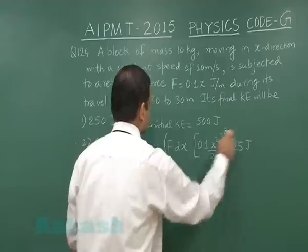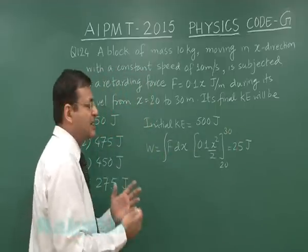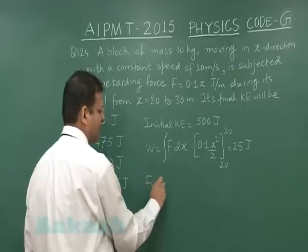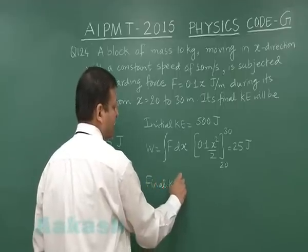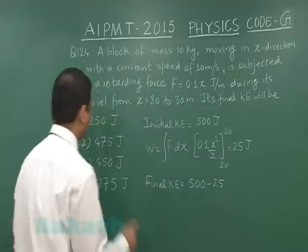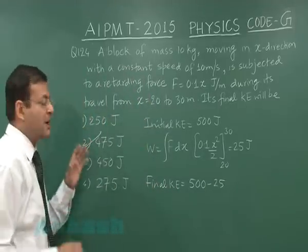So you see this much work is basically reducing the kinetic energy. So final kinetic energy will simply be 500 minus 25 and that will be equal to 475 joules. So I am marking option 2 for question number 124.